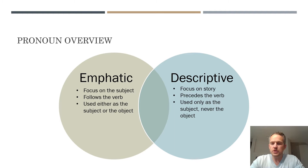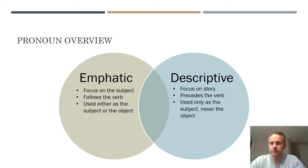As you can see in the slide — and there are links to these slides below — for emphatic pronouns, the focus of the sentence is going to be on the pronoun itself, or in other words, the subject of the sentence. If you're using descriptive pronouns, the focus is more on the story, describing what actually happened. For emphatic pronouns, the pronoun always follows the verb. In descriptive pronouns, the pronoun always precedes the verb.